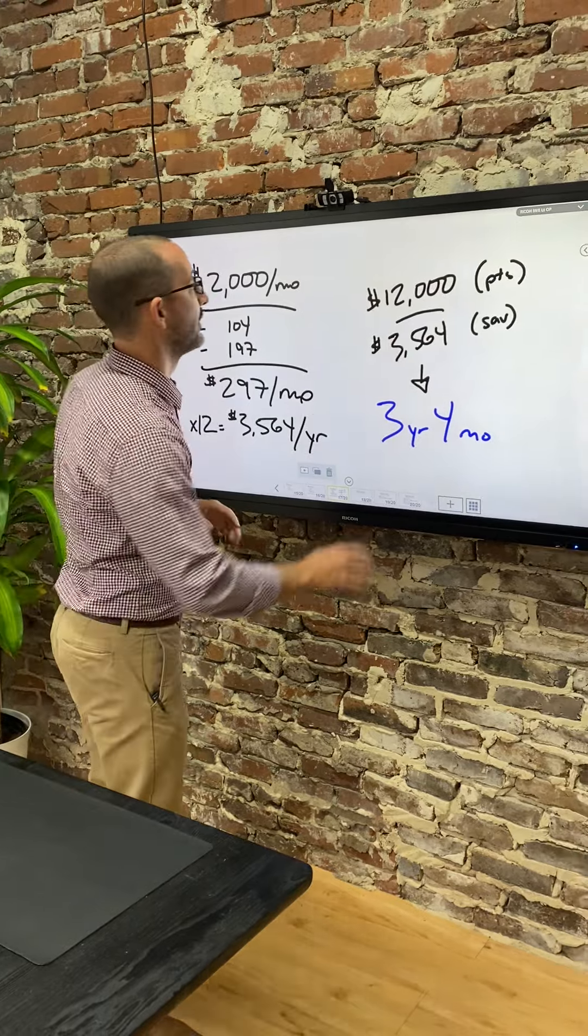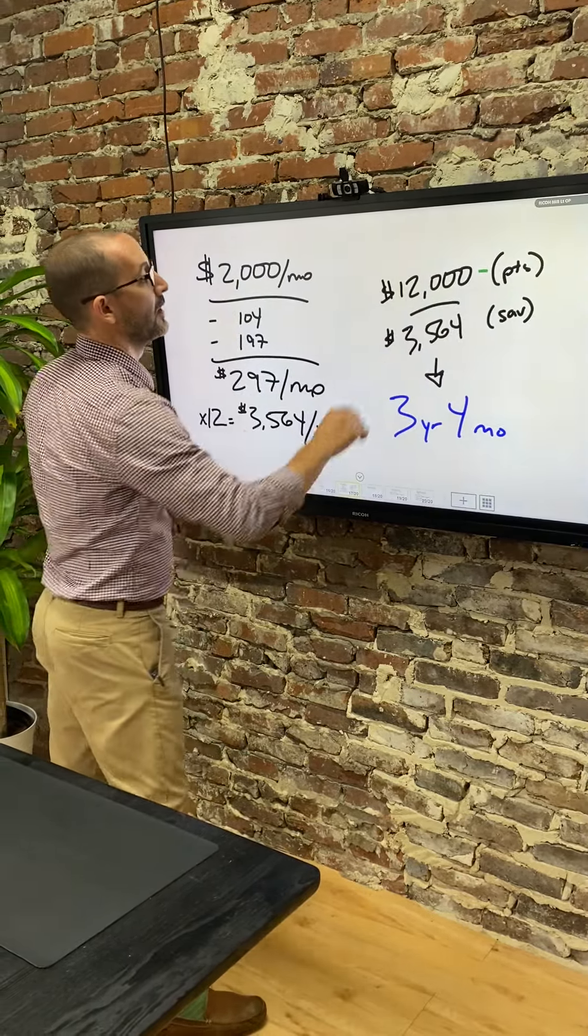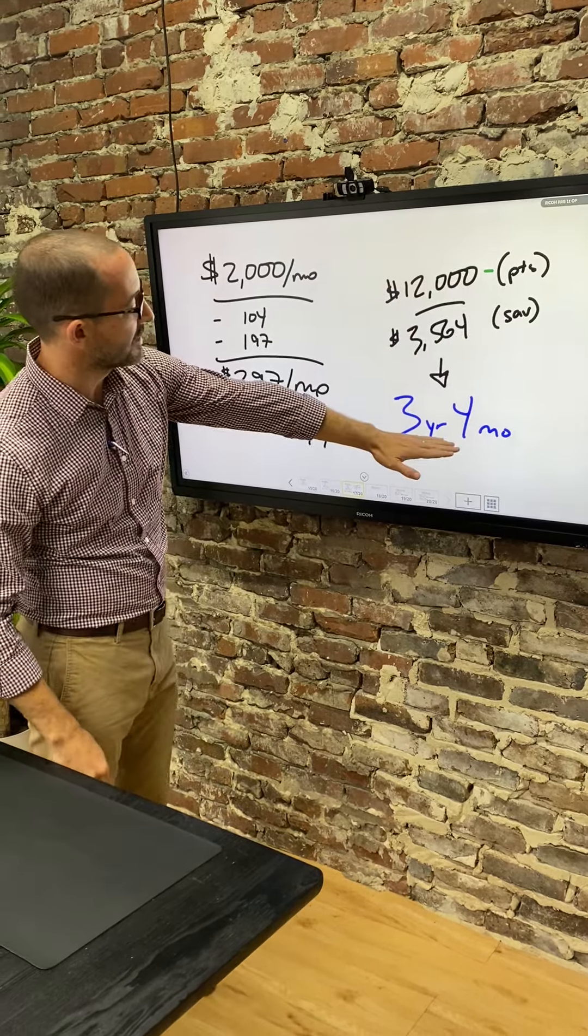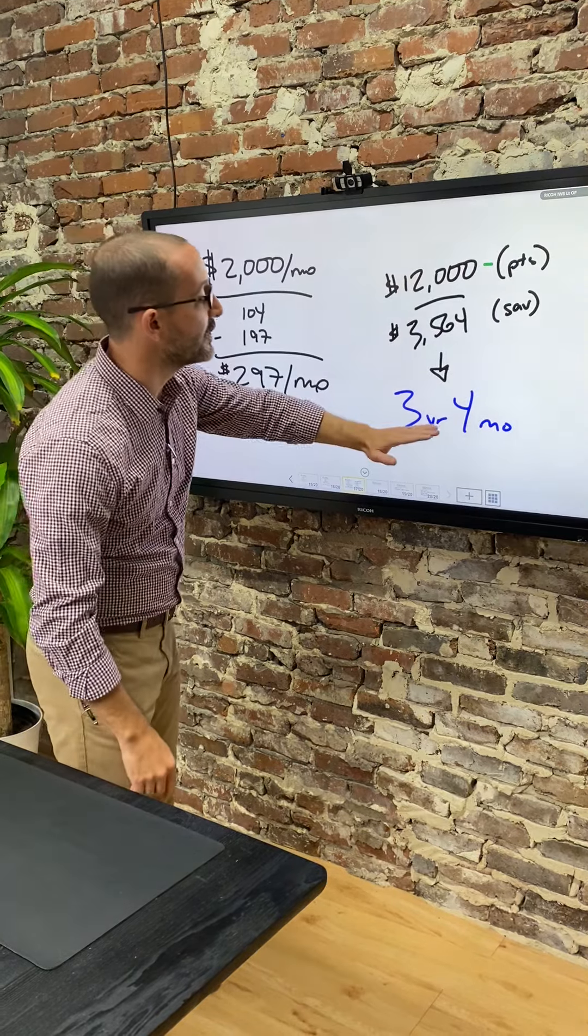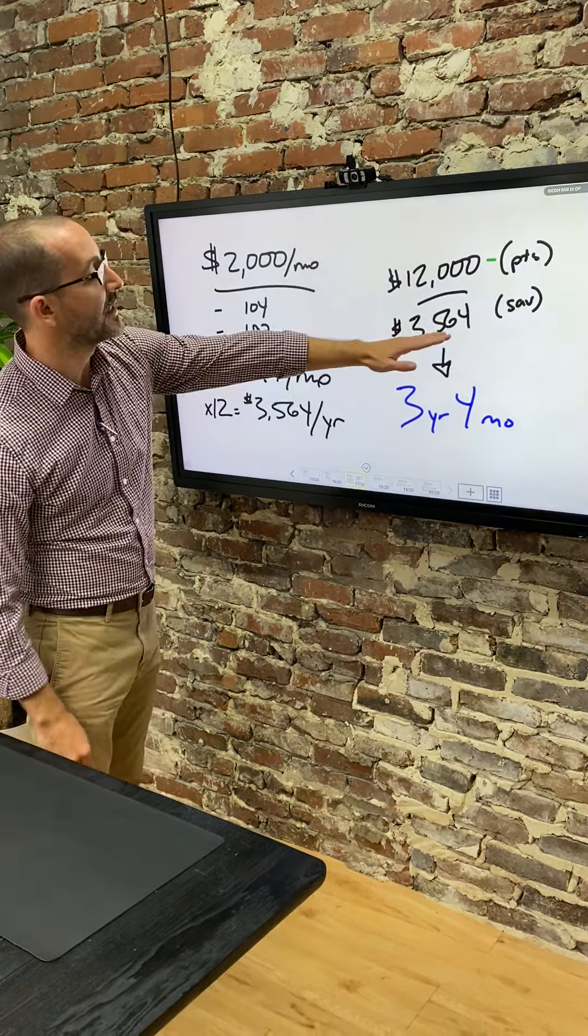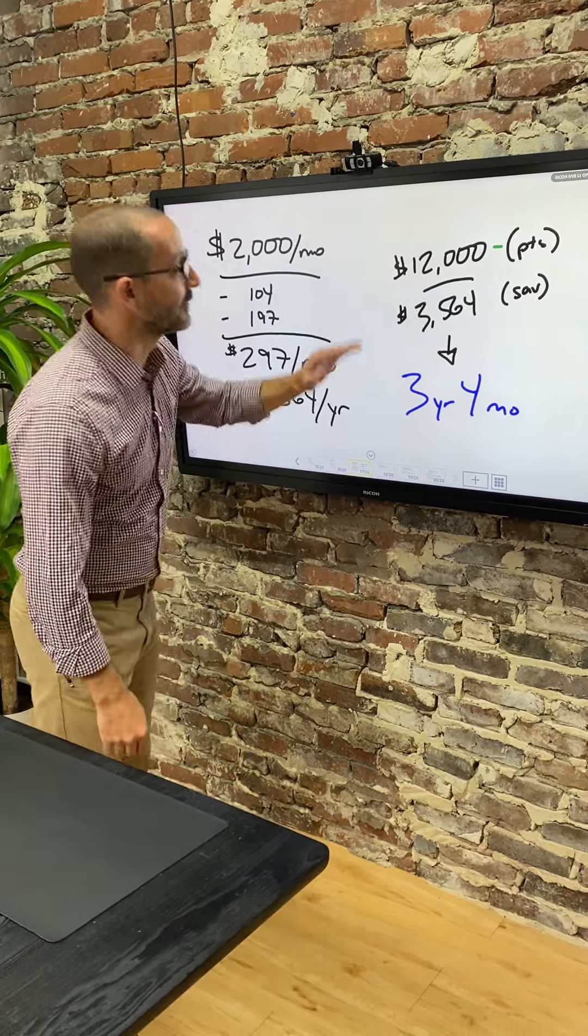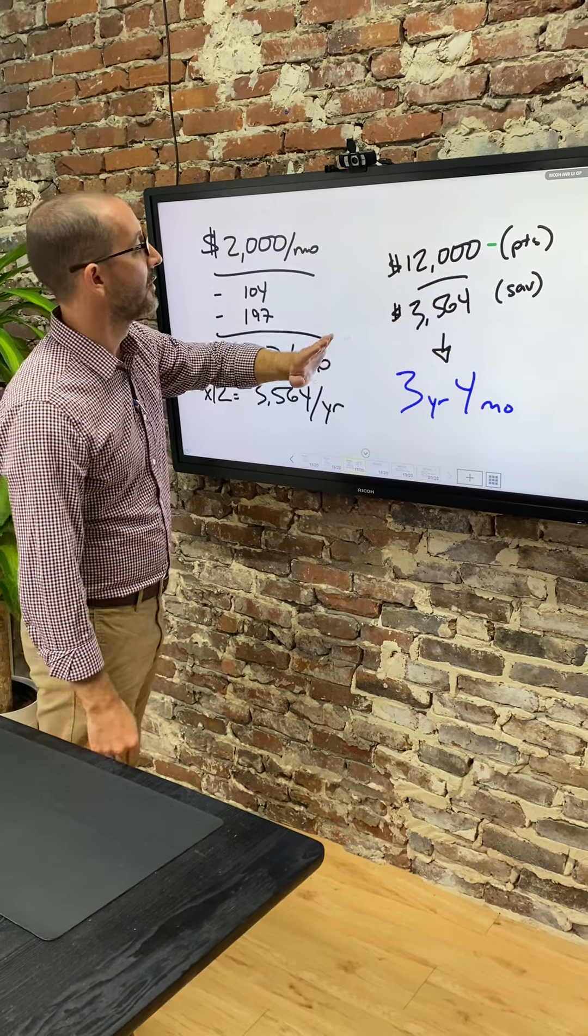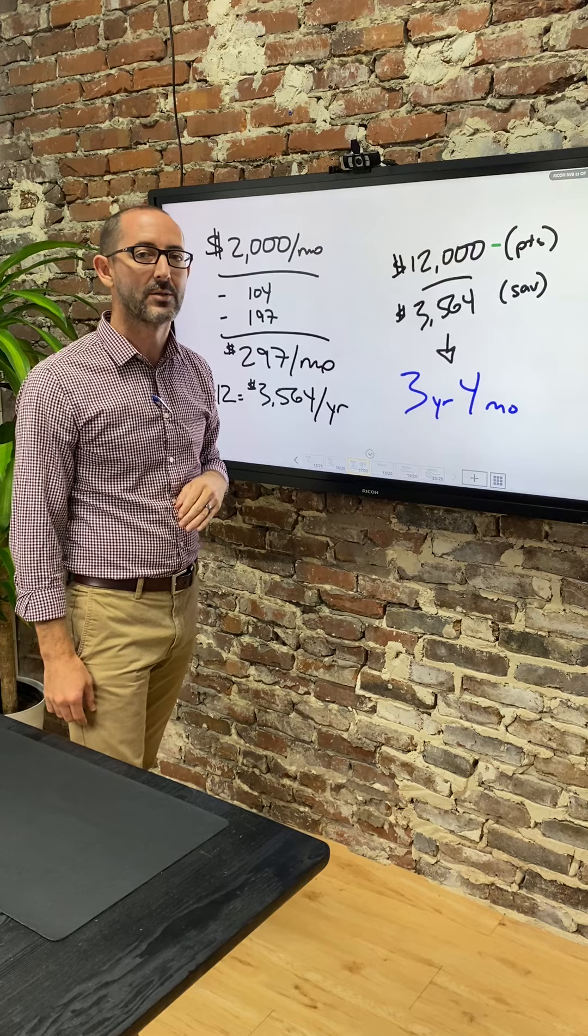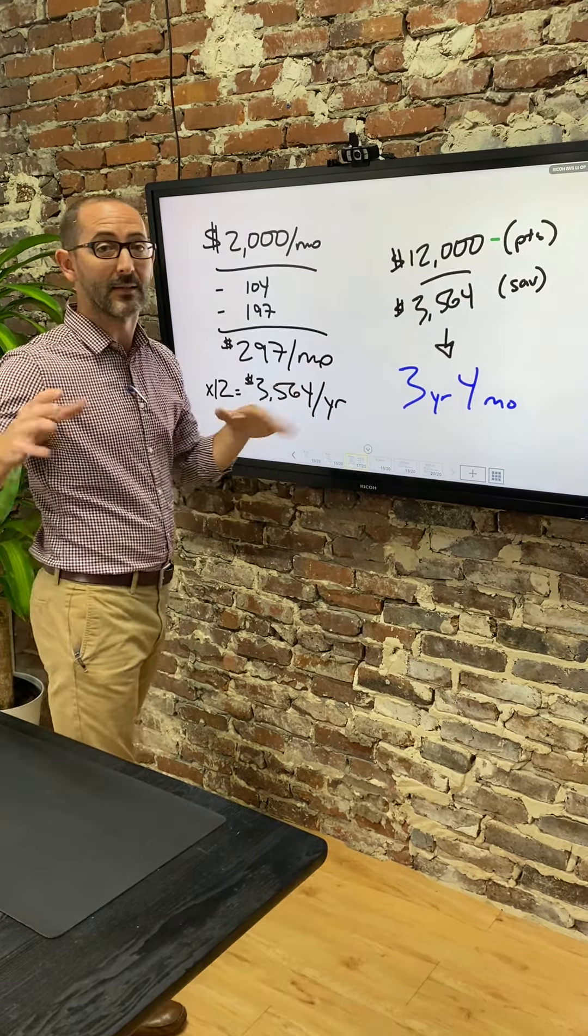Now, bear with me here. You spent $12,000 on points. You saved $3,564 a year. That means you're paying yourself back in three years and four months. Do you know what you get to do every year after that? You get to take this savings and you get to go on a vacation. You literally, by spending $12,000 when you bought your house, can take a vacation every year after the third year you own your house. A vacation every year. Now tell me, that's got to be something.